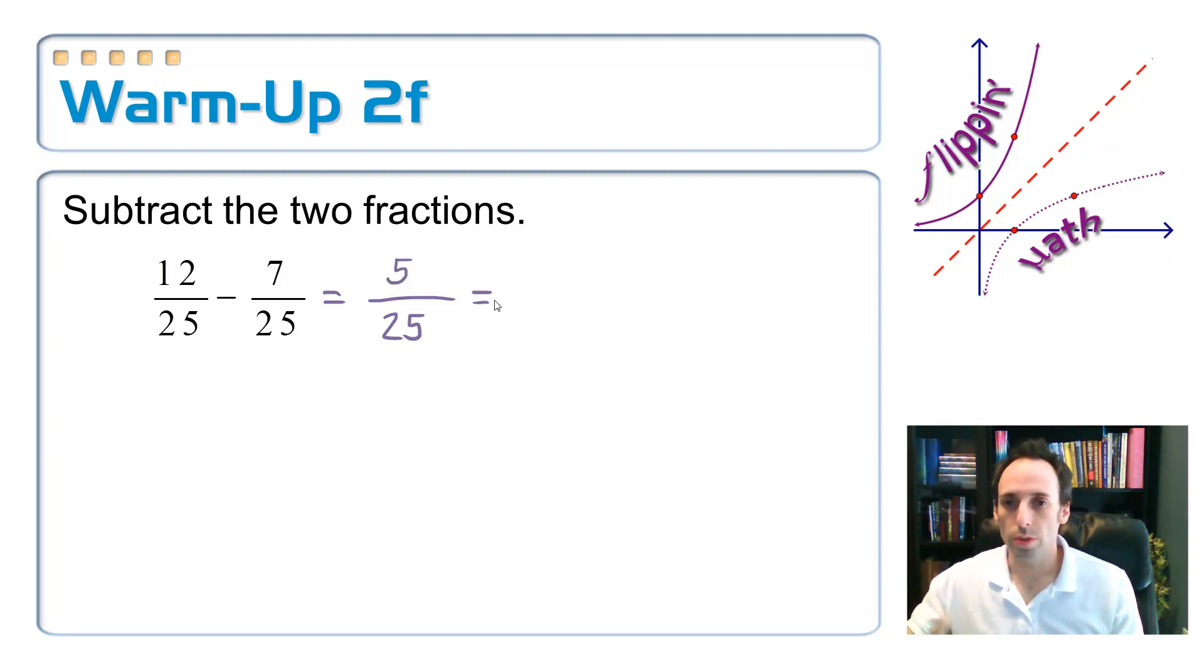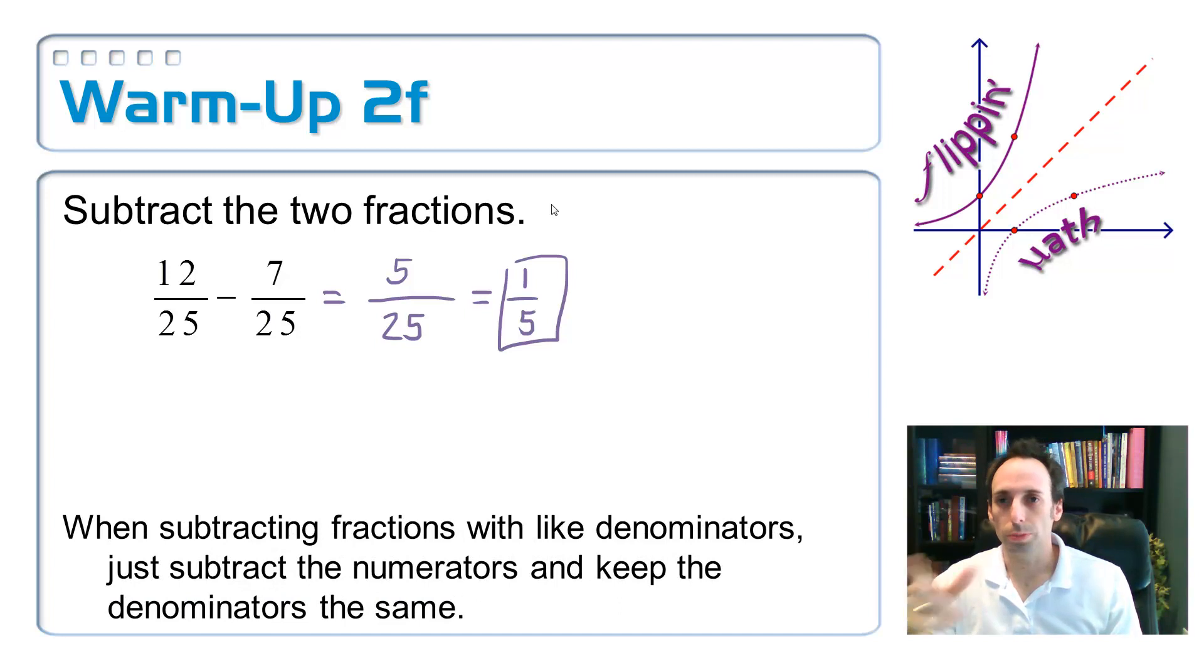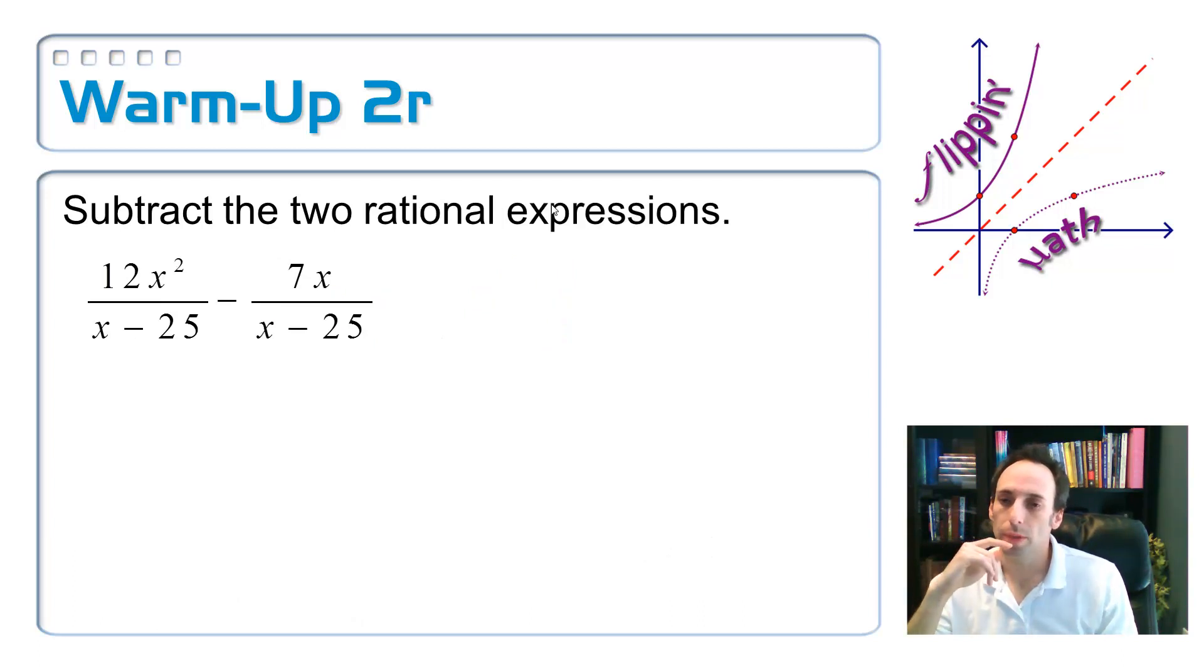I think that is five, and that reduces to one fifth. So when you're subtracting fractions, just like when you're adding them, if they already have the same denominator, just subtract the two tops. I wonder if this is going to get more difficult, like if the denominators aren't the same.